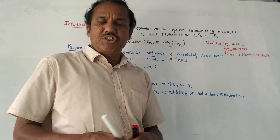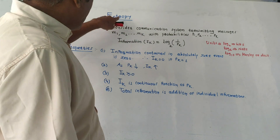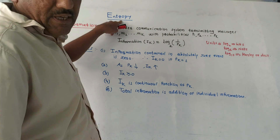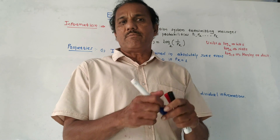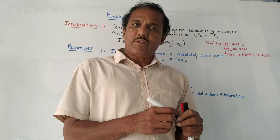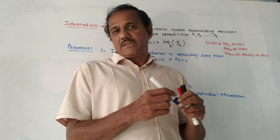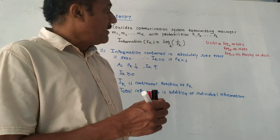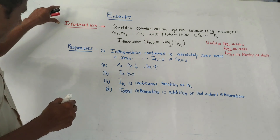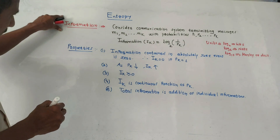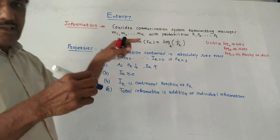Hello and welcome back to this channel. This topic is entropy, from unit number five — information theory — of the subject digital communication. First, let us discuss the meaning of the word information.